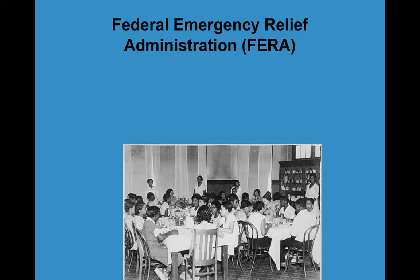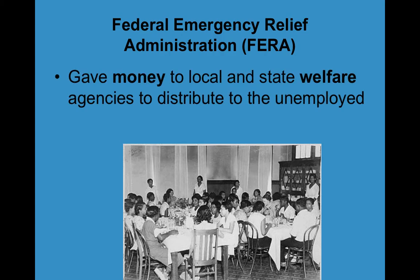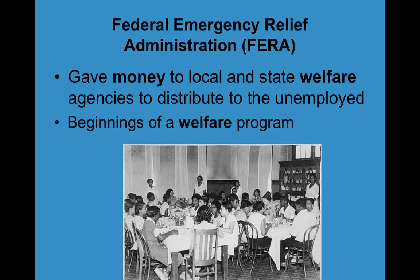One of the first major New Deal programs was called the Federal Emergency Relief Administration, or FERA. This program gave money to local and state welfare agencies to distribute to the unemployed. This is kind of the beginning of the welfare program where people are helped out by the government if they're unemployed. Nowadays we have unemployment checks, food stamps, and WIC, which is for women and children.